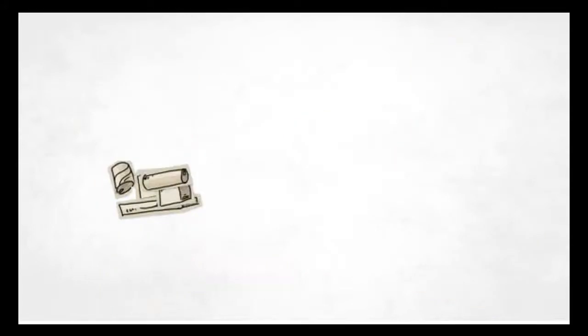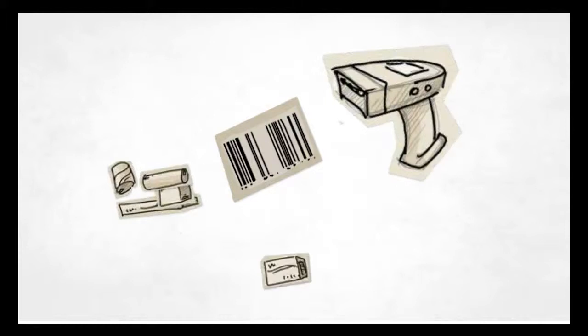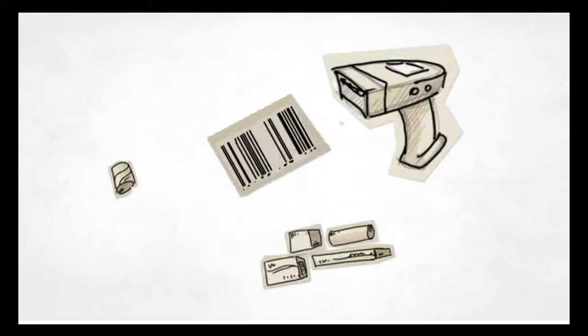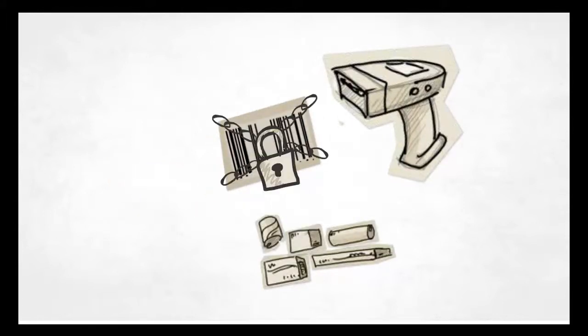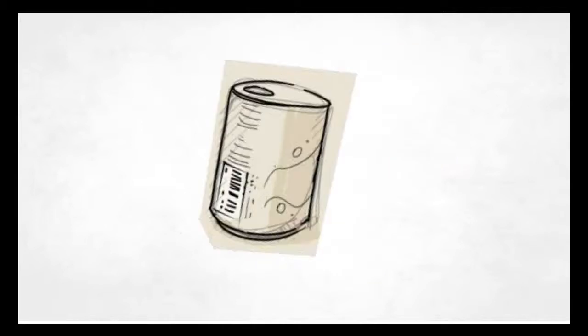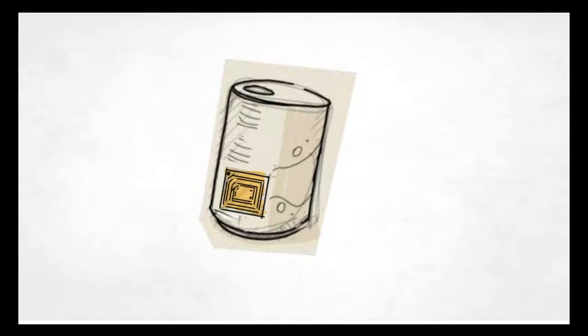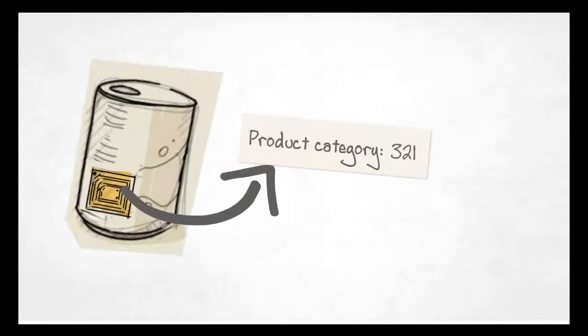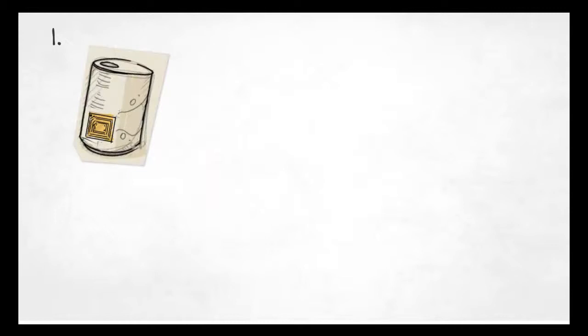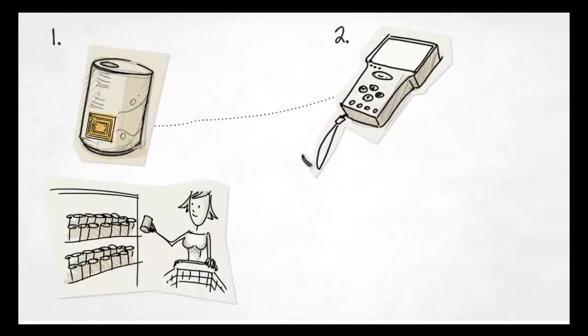However, despite their many advantages, barcodes must be read one at a time and the information they contain is fixed. What if those barcodes were replaced by chips that could not only be read more quickly but could have their information updated as well? And what if those chips could communicate with other devices?